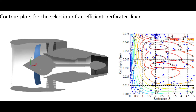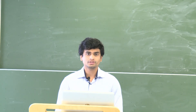However, the modeling of these liners for different liner properties like the cell depth and the liner resistance requires a large number of calculations. This requires days of computational time and is not acceptable for the initial design.